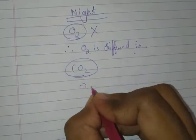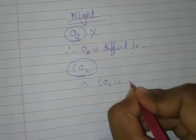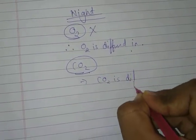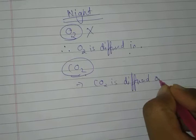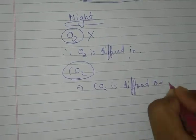But can this carbon dioxide also be used for photosynthesis at night? No it cannot. So the plant will throw it out - carbon dioxide is diffused out at night.